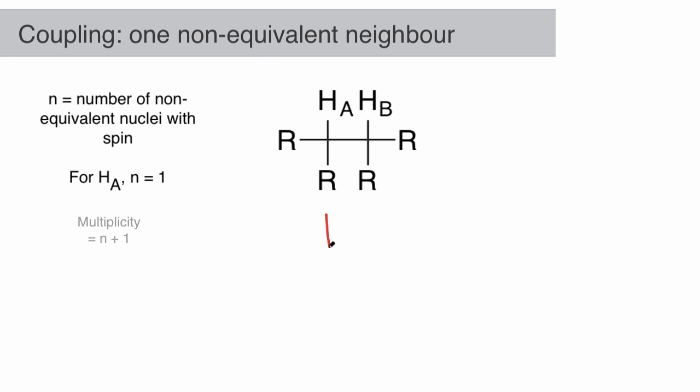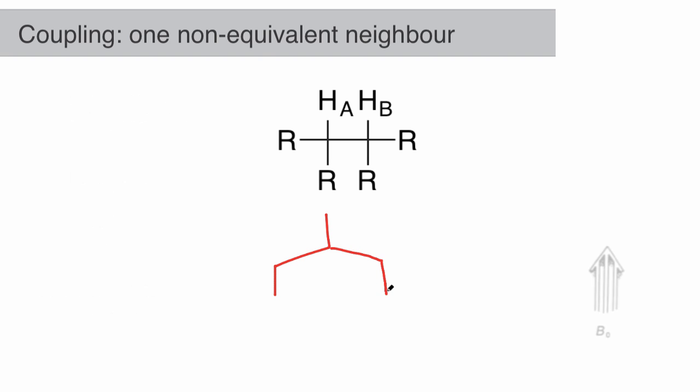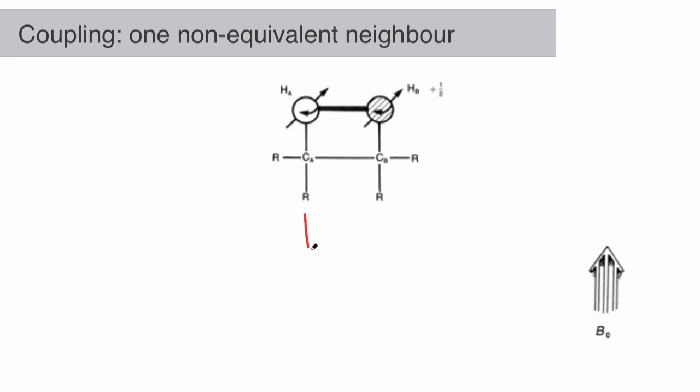Simple coupling follows the N+1 rule, and so the proton signal will be a doublet. But why? Remember how the proton was affected by the spectrometer's magnetic field? A proton, or any other nucleus with spin, will also be affected by other nuclei around it that have a magnetic moment.